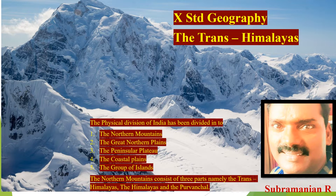Generally, the physical division of India has been divided into the northern mountains, the Great Northern Plains, the Peninsula Plateau, the coastal plains, and the group of islands. The northern mountains consist of three parts: the Trans Himalayas, the Himalayas, and the Purwangel. In this lesson we are going to deal with the Trans Himalayas.